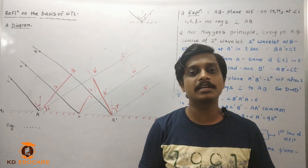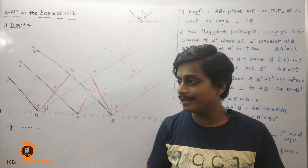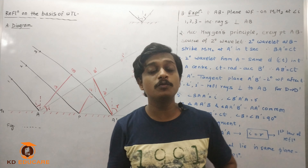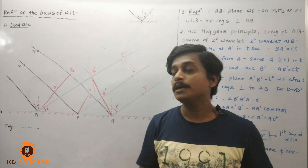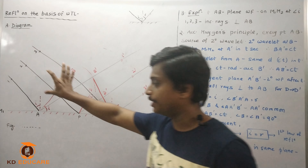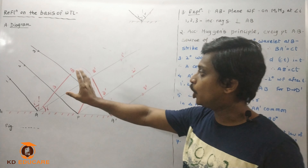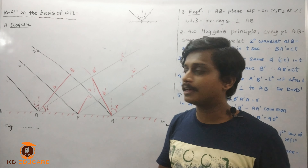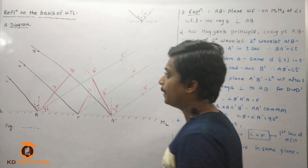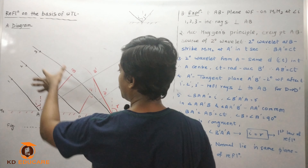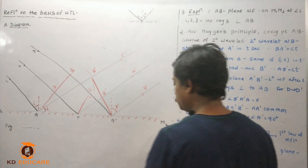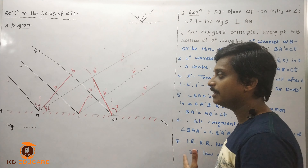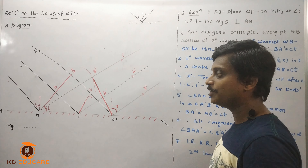Now we have the reflection concept in wave optics, but here we are going to use a whole wavefront. Imagine a plane wavefront coming from a source of light. M1M2 represents a reflecting surface where this plane wavefront reflects.